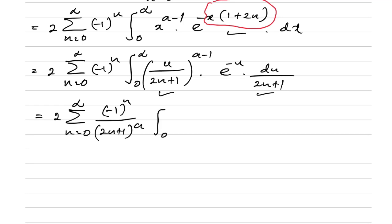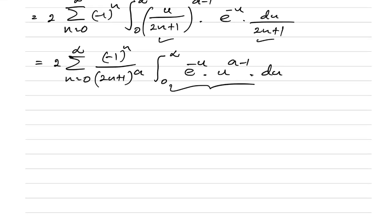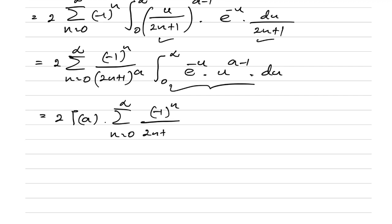We recognize the integral from 0 to infinity of u^(a-1) e^(-u) du as the definition of the Gamma function. So the result is 2 times Gamma(a) times the sum from n=0 to infinity of (-1)^n over (2n+1)^a.